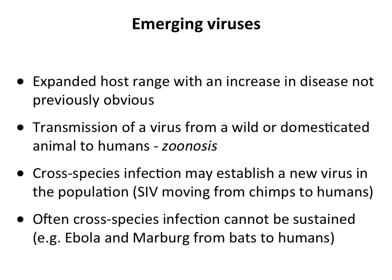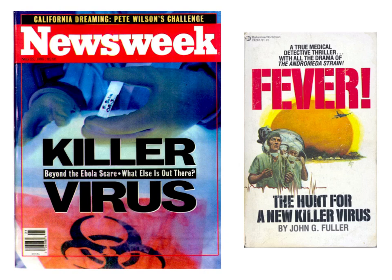Sometimes zoonoses don't sustain in people very effectively. Ebola and Marburg viruses spread from bats to humans, causing small outbreaks, but they never really transmit well in the human population. They're still called emerging infections, and there's always the chance they could evolve to transmit effectively among people. The press loves emerging viruses because they are scary — Ebola's emergence from monkeys to people seemed highly lethal.